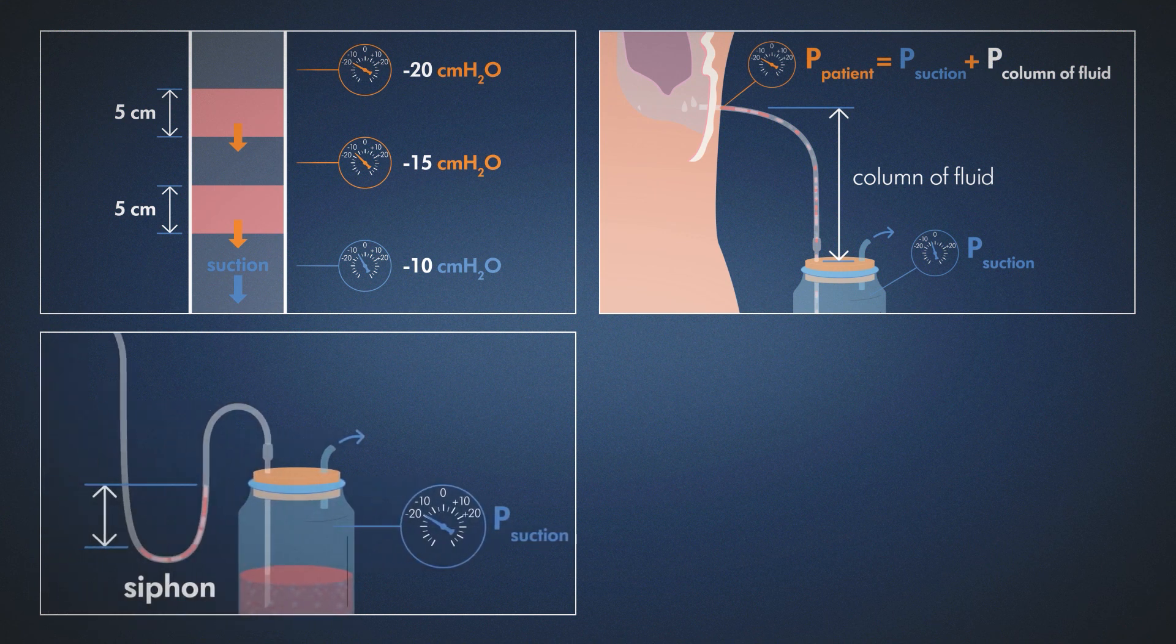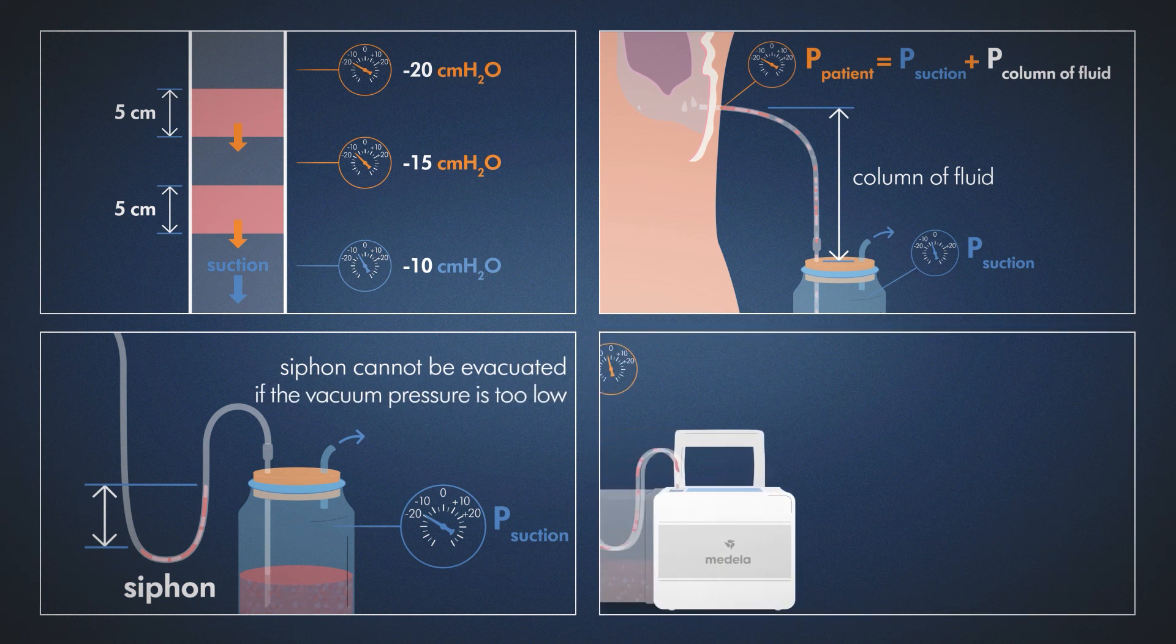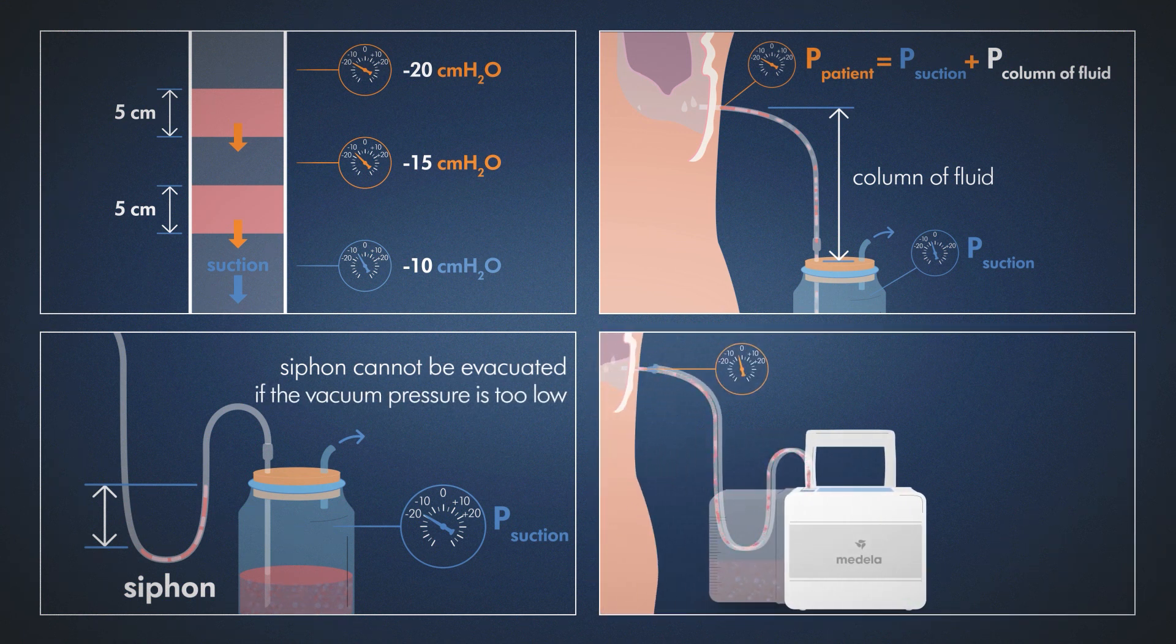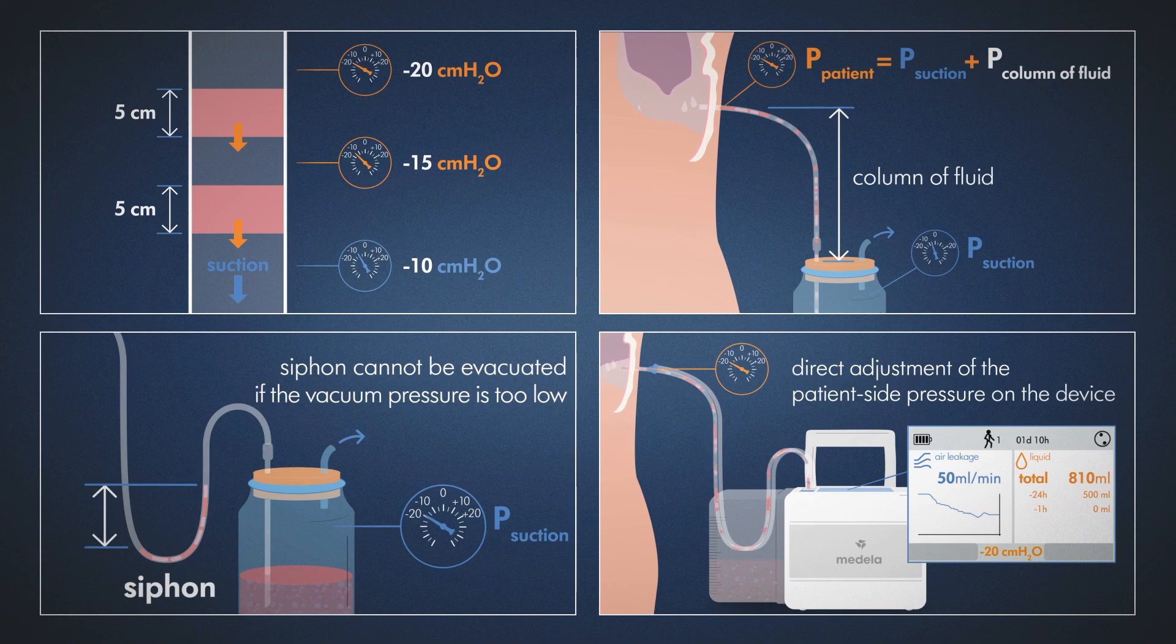If the hose forms a siphon, this cannot be evacuated if the vacuum pressure is too low. The TOPAS Plus drainage system compensates for the influence of gravity on fluids in the tubing and allows direct adjustment of the patient-side pressure on the device.